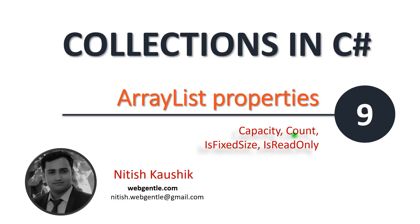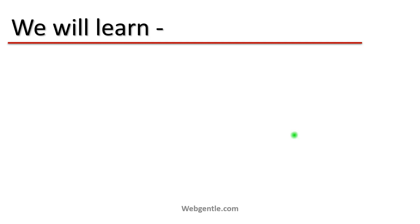Welcome to this next part of collections. In the previous part we learned about ArrayList — how to declare it, how to get and set values, and perform multiple operations on ArrayList. Now it's time to learn about a few important properties of ArrayList that are used on a regular basis. In this video we will learn about the capacity property and the count property.